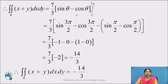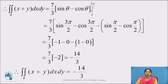Now, let us evaluate this. We first substitute the upper limit: sin(3π/2) − cos(3π/2), then subtract the lower limit: sin(π/2) − cos(π/2). We know that sin(3π/2) = −1, cos(3π/2) = 0, sin(π/2) = 1, and cos(π/2) = 0. So we can write it as 7/3 × [(−1 − 0) − (1 − 0)] = 7/3 × (−1 − 1) = 7/3 × (−2) = −14/3. Therefore, the value of the double integral over R of (x + y) dx dy equals −14/3.